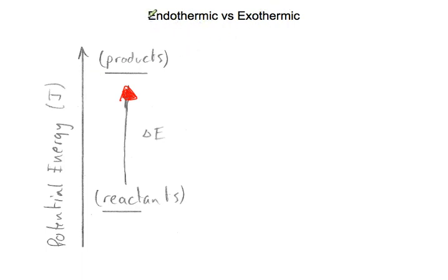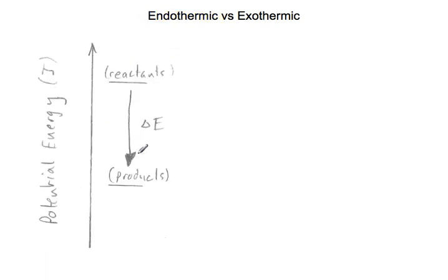So reactants energetically lower than products, energy has been added to the system, and that's an endothermic reaction. On the other hand, we have the arrow pointing down now. So reactants to products, the reactants are energetically higher than products, products are lower. So less energy in the products, that means energy must have been released somewhere. Energy was released to the surroundings, and that's an exothermic reaction. So endothermic and exothermic, you want to make sure you know the difference in terms of potential energy and the differences in energy of reactants and products.